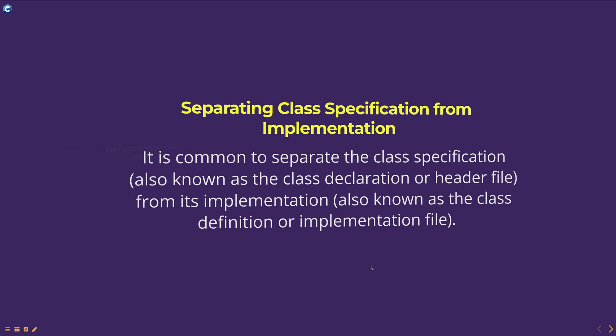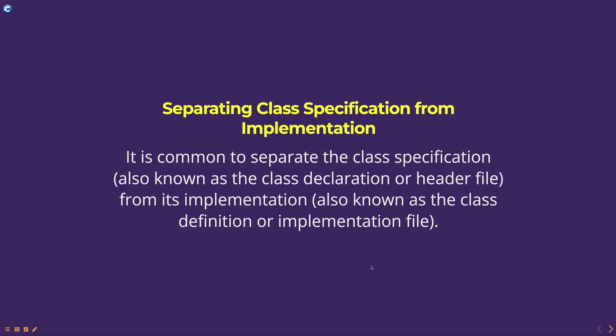In C++, it is common to separate the class specification, also known as the class declaration or header file, from its implementation, also known as the class definition or implementation file. This means that the class definition is split into two parts: the declaration of the class members in a header file and the implementation of the member functions in a separate source file.